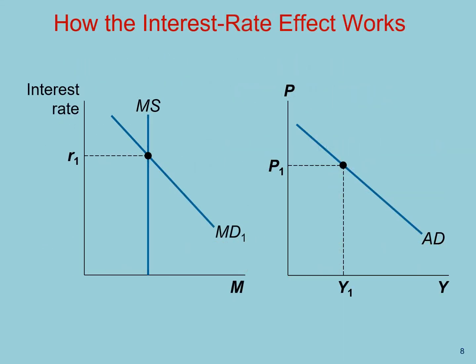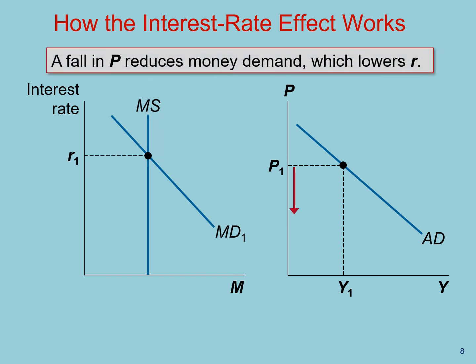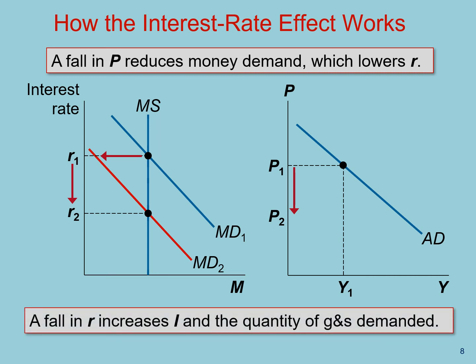Now that we understand the determinants of money demand, let's use the framework we've developed to expand our understanding of the interest rate effect. Let's start with a fall in the price level. A fall in the price level reduces money demand and shifts it to the left. The new equilibrium interest rate is lower than before and reduces the cost of borrowing, which stimulates investment. Increasing investment means that demand for goods and services will increase, raising real output. This relationship between prices and real output is a major motivator for the downward slope of the aggregate demand curve.